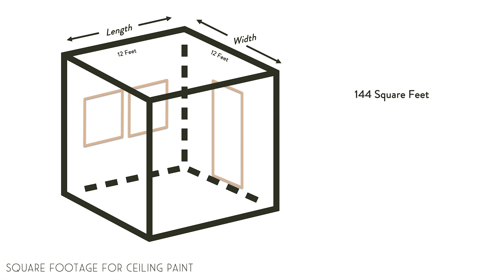If you are doing two coats, you would only need to purchase one gallon of paint because 144 times 2 equals 288 square feet, which is less than that estimated 350 square feet that a single gallon of paint will cover.